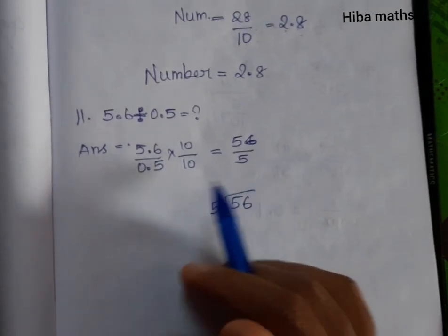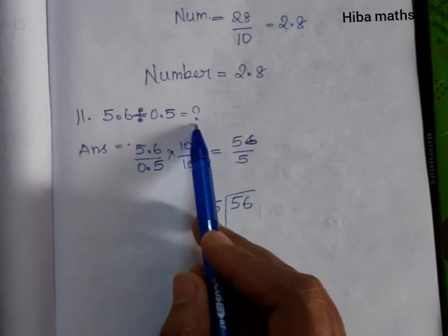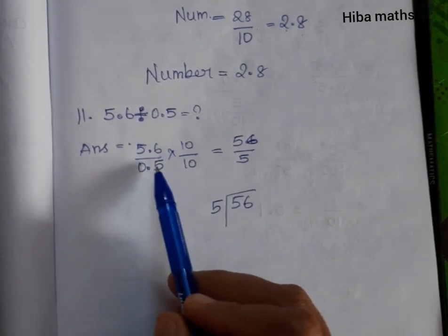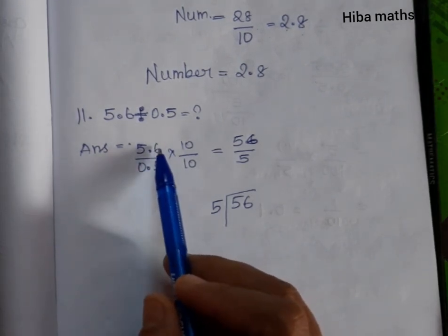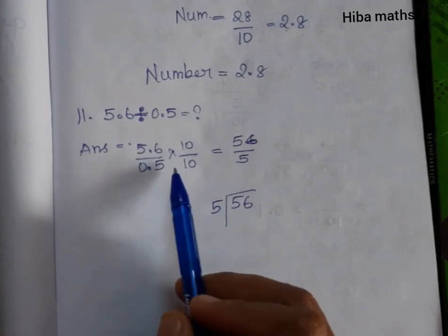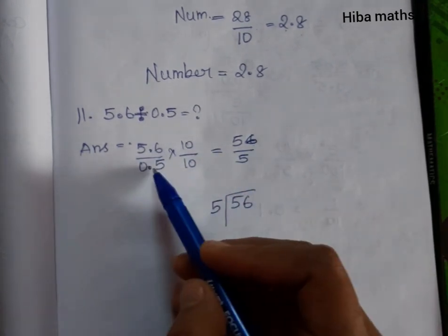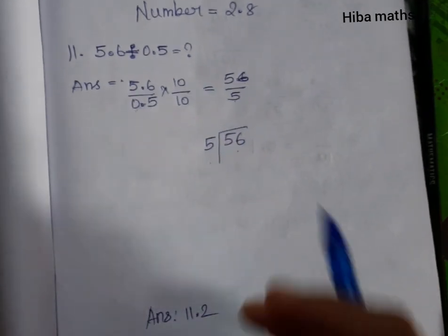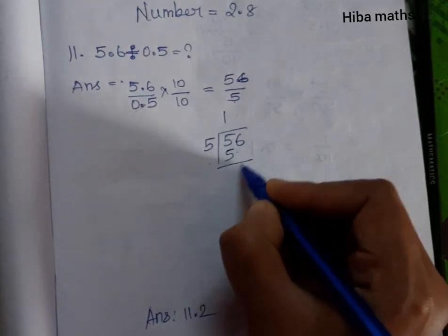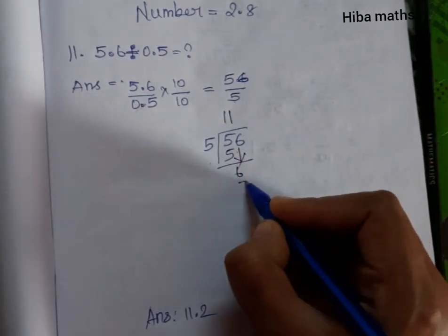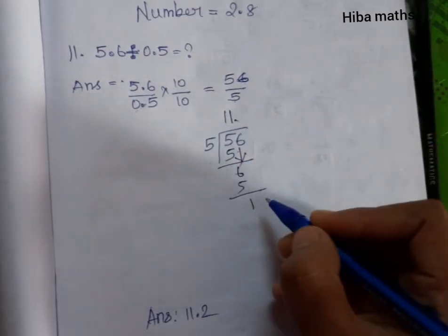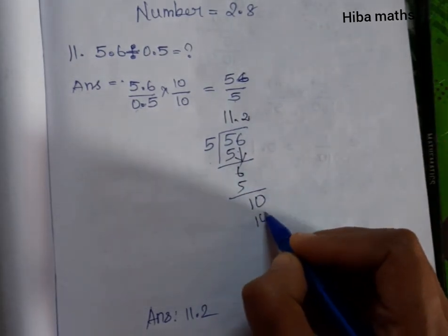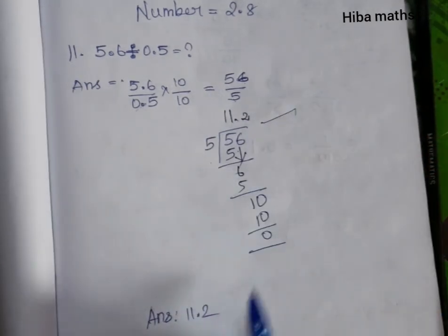Objective questions. 5.6 divided by 0.5 equals dash. So 5.6 divided by 0.5: multiply both by 10 to remove the decimal point. We get 56 divided by 5. 5 ones are 5; bring down 6. 5 ones are 5, balance 1. Add decimal and zero. 5 twos are 10; balance 0. The answer is 11.2.